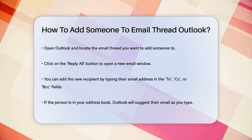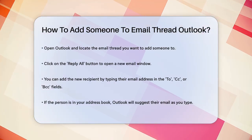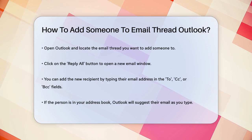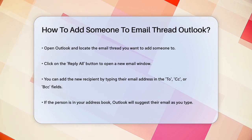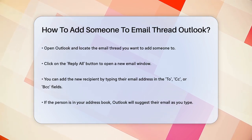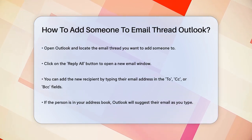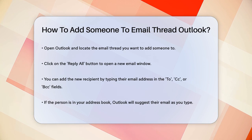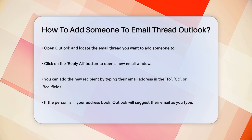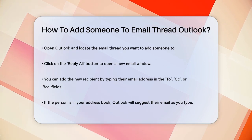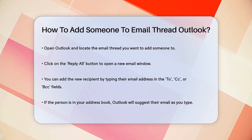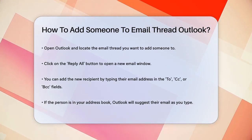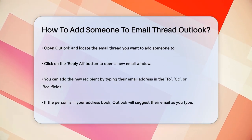First, open your Outlook and navigate to the email thread you want to add the new person to. Once you've found the thread, click on the Reply All button. This will open up a new email window where you can add the new recipient.